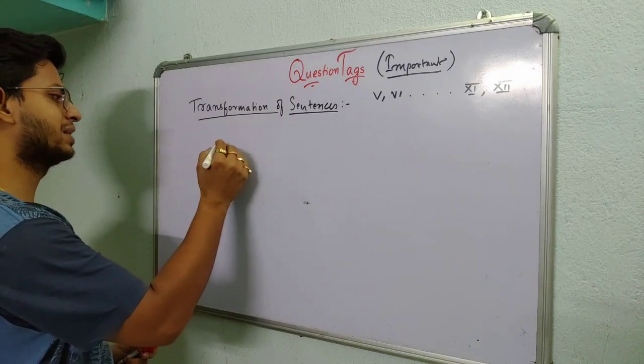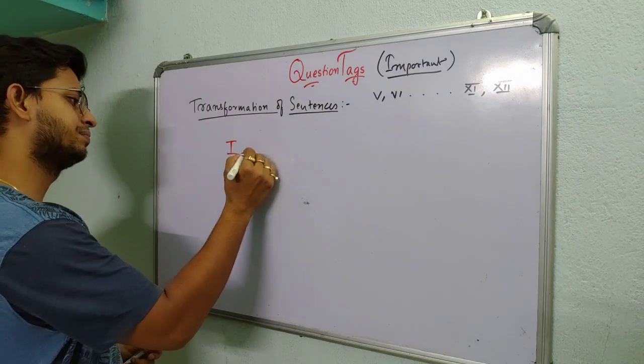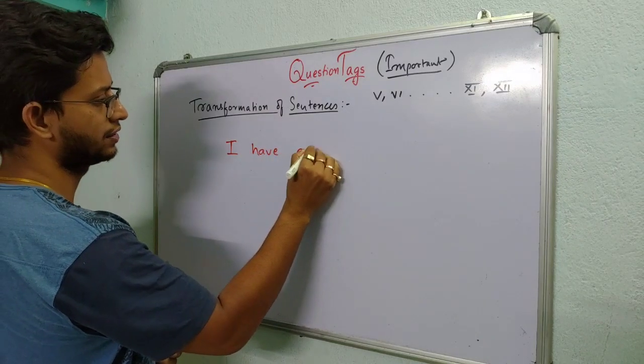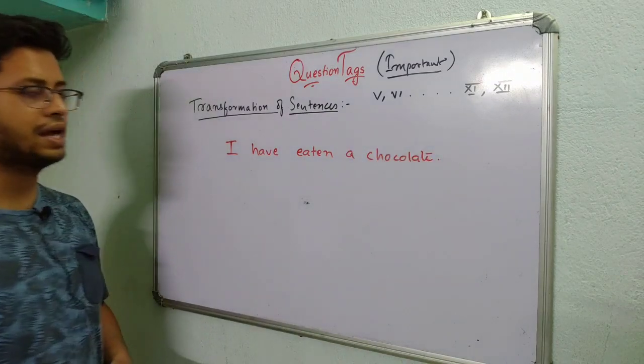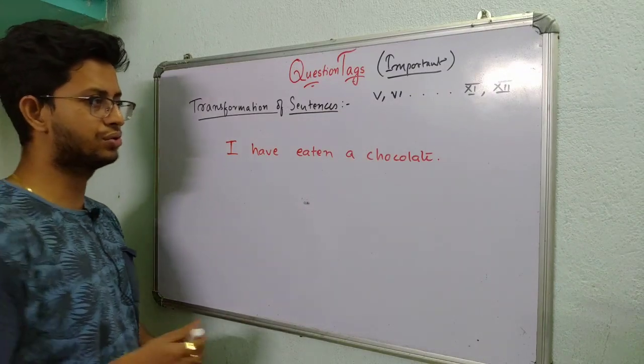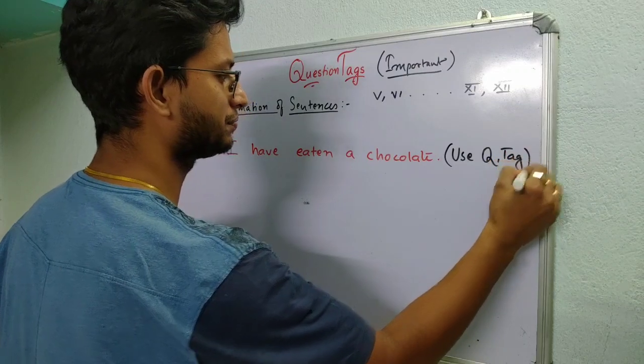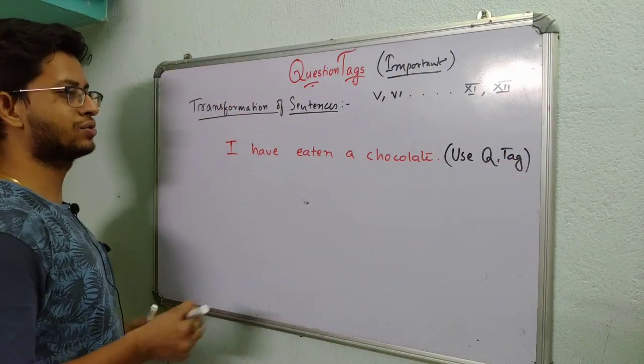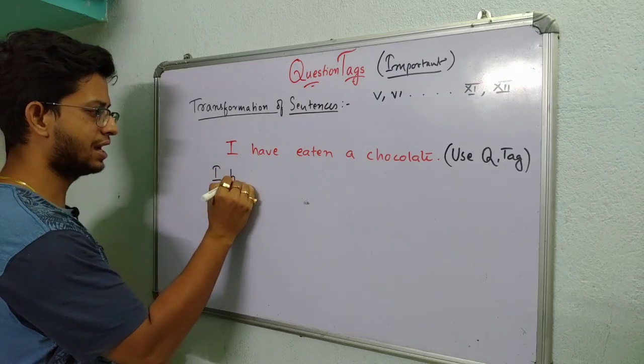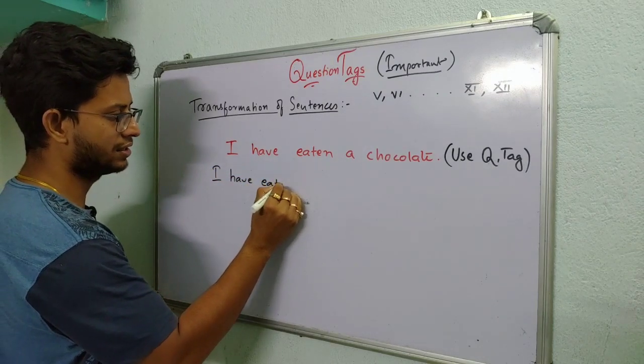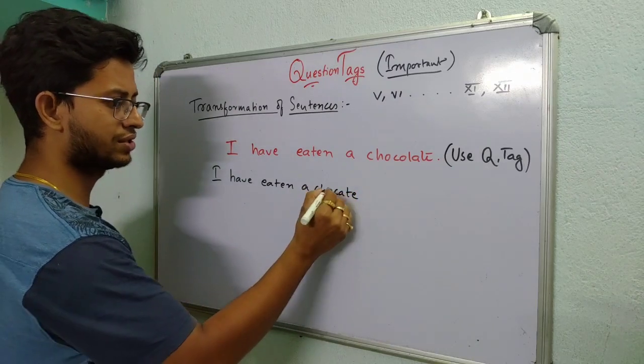So look, I have eaten a chocolate. Now if you are asked to use question tag, how you will change the sentence? Use question tag. I am writing Q tag. So it means question tag. When you are told to change this using question tag, how to do it? It's very easy. First see, you will write I have eaten a chocolate. You will write this full sentence as it was given in your question.